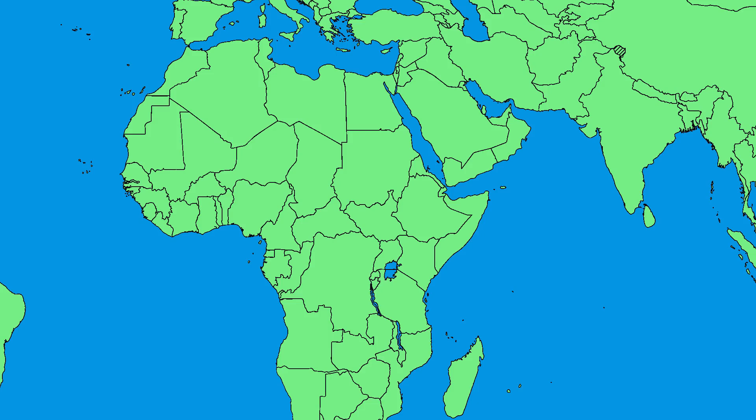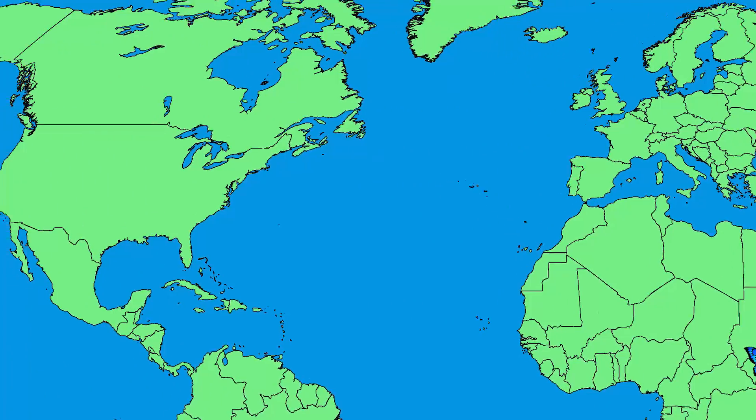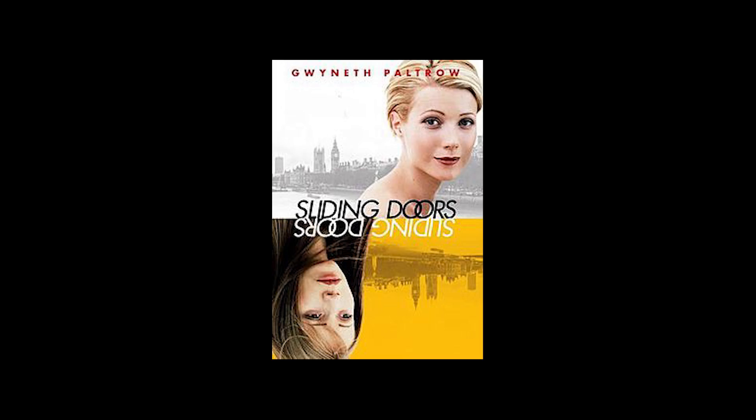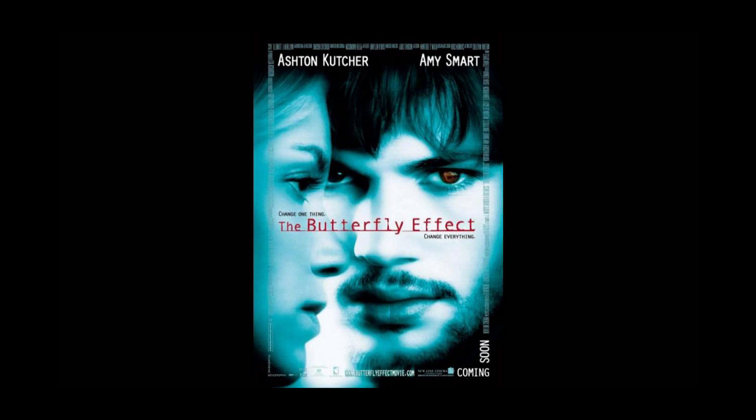This effect is sometimes called the butterfly effect — the idea that a butterfly flapping its wings in Africa could mean a tornado in Iowa. This sensitivity to initial conditions, or butterfly effect, is definitely the aspect of chaos theory that is the most popular and has inspired the most fiction and movies.